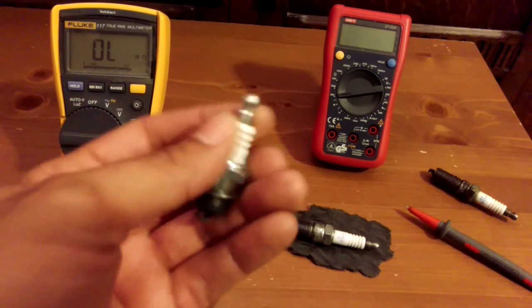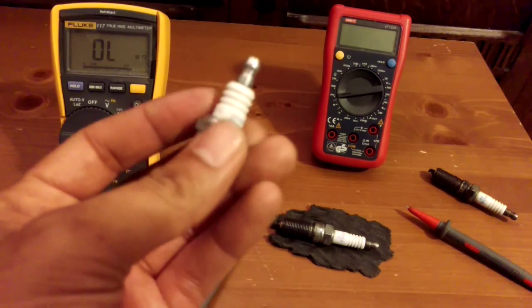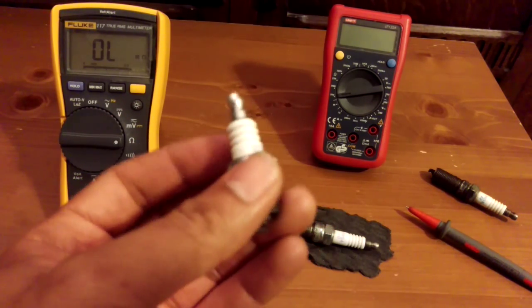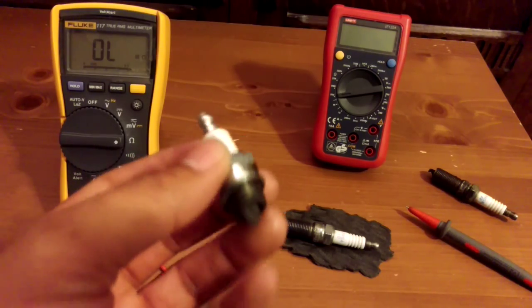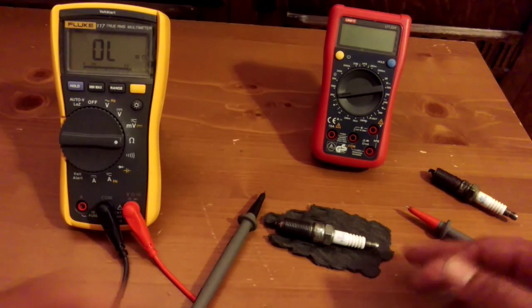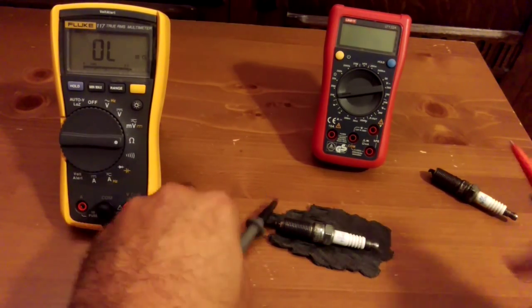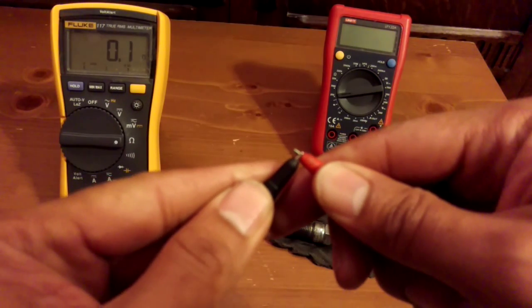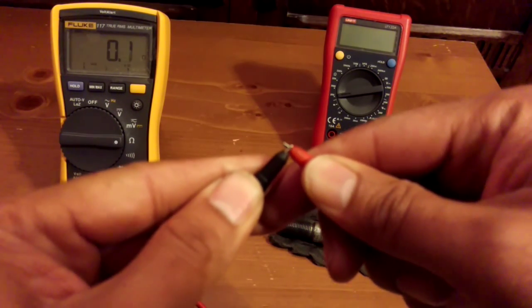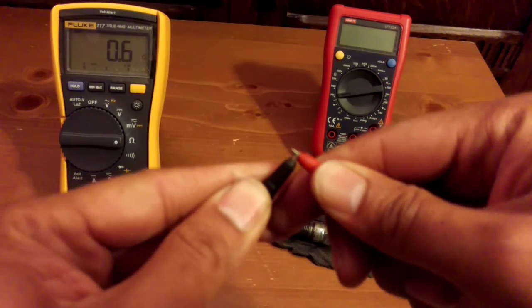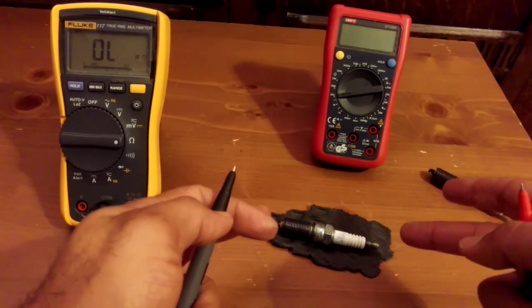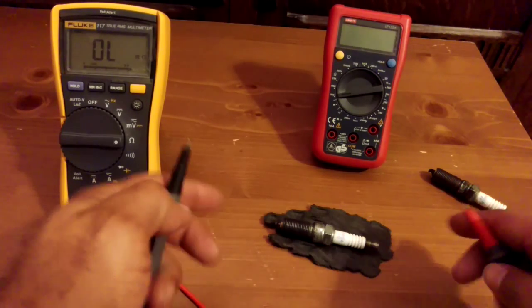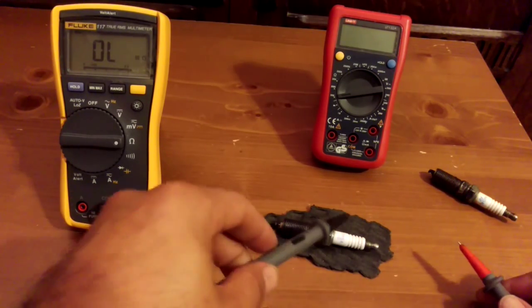If it was a non-resistor spark plug, say if it was off a chainsaw or a little two-stroke engine, then you're looking for a figure of zero between those two points. You would basically tap your leads together so you've got 0.1 in the leads, 0.2, and you'd be looking for a figure of 0.1 to 0.2 between those two points if it was a non-resistor spark plug.